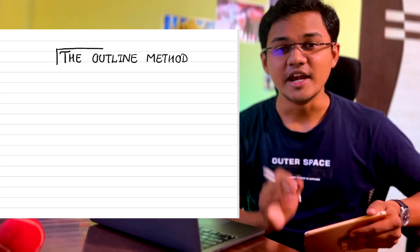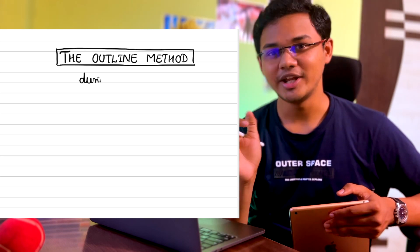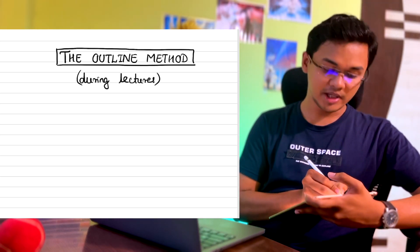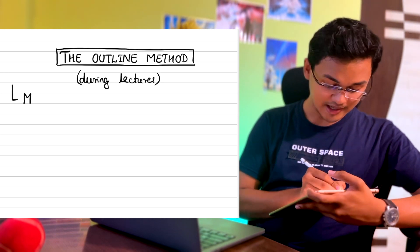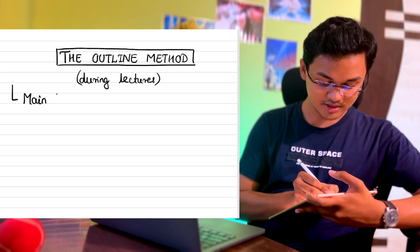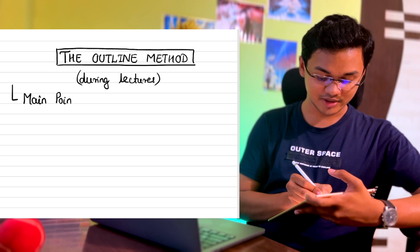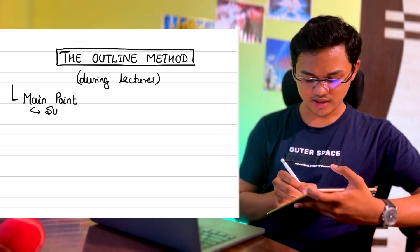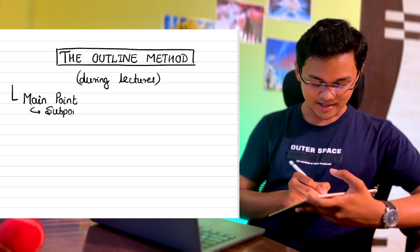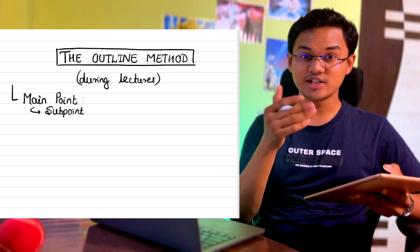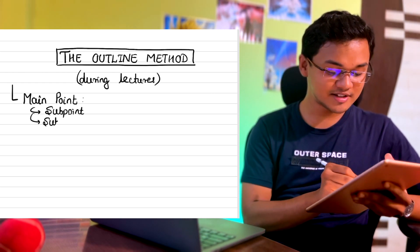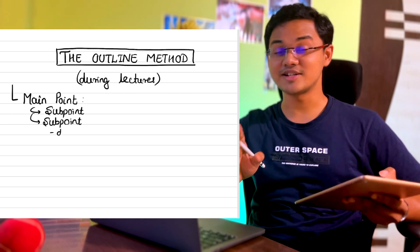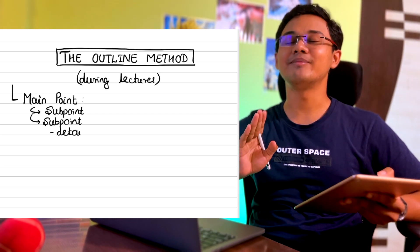Number one: the outline method. It is the most structured and organized note-taking method, usually used during lectures. First, you add your main point as a bullet or a star, then you create sub-points according to the information. Each sub-point usually has one or a couple of lines of information, and you can create sub-sub-points as and when needed.